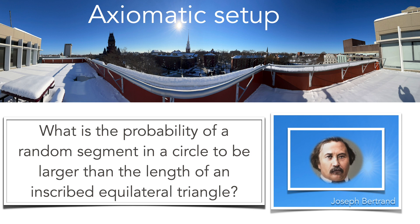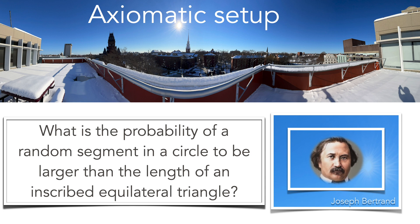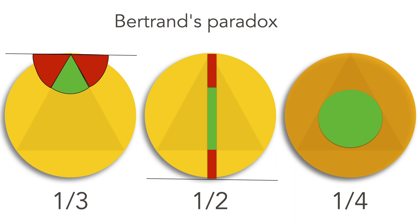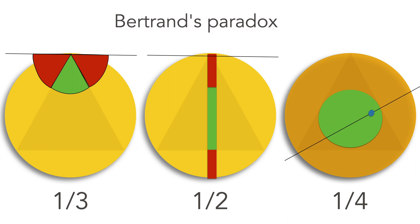The axiomatic setup of probability theory was put forward by Kolmogorov. Interpretations can be difficult, and one must be very clear about what the probability space is. Bertrand's question asks: what is the probability of a random chord in a circle being longer than the side of an inscribed equilateral triangle? There are three valid answers — one-third, one-half, or one-fourth — depending on the method. Spinning the line gives one-third; rolling the line gives one-half; throwing the center of the chord gives one-fourth. Each argument is correct.